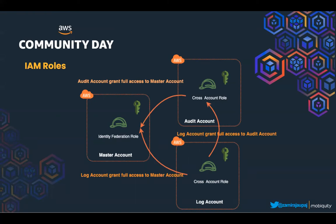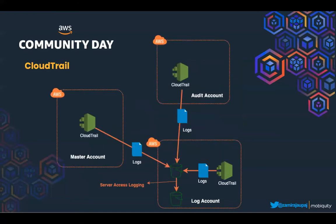Now let's move to another resource as part of Control Tower: CloudTrail. CloudTrail collects the history of API calls through the AWS Management Console, SDK, command line tools, and other AWS services. It is enabled across all AWS accounts and all regions. All the logs are collected in an S3 bucket located in the log account. In this account, a second bucket is also created to collect the access logs from the first bucket, and both are in the same region.